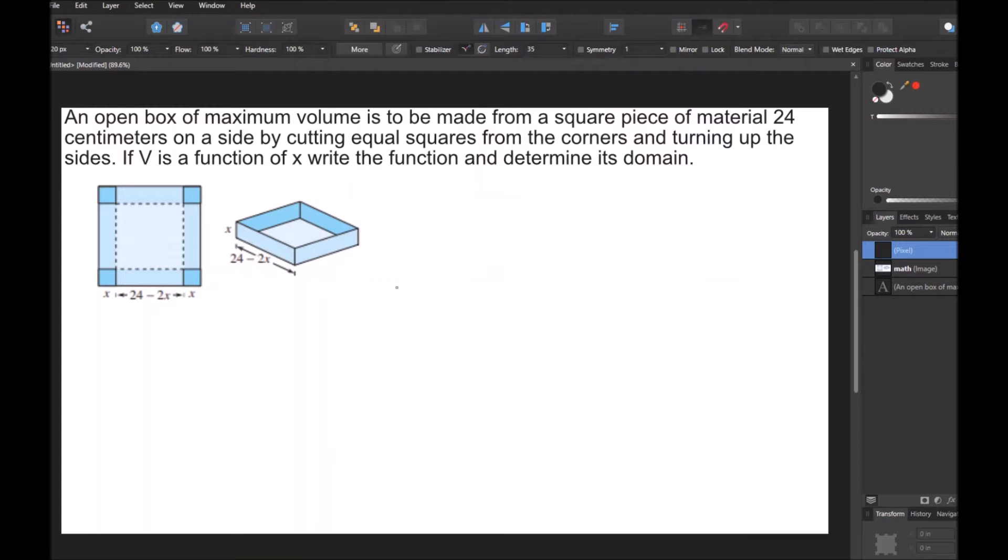Okay, so in this next question, we are told that an open box of maximum volume is to be made from a square piece of material, 24 centimeters on a side, by cutting equal squares from the corners and turning up the sides. We're given a figure to kind of illustrate what that means. And it says, if the volume V is a function of X, write the function and determine its domain.